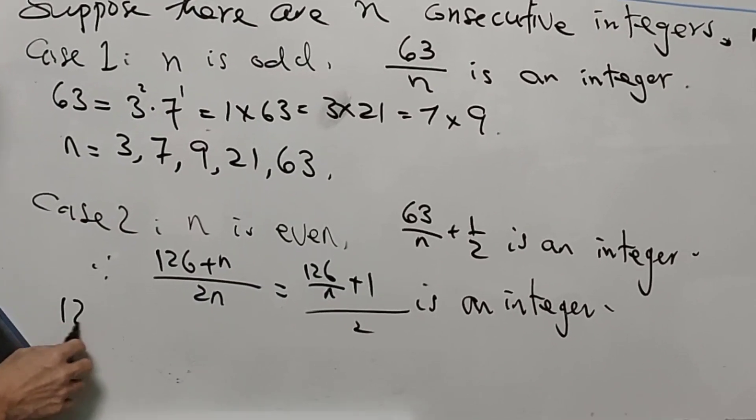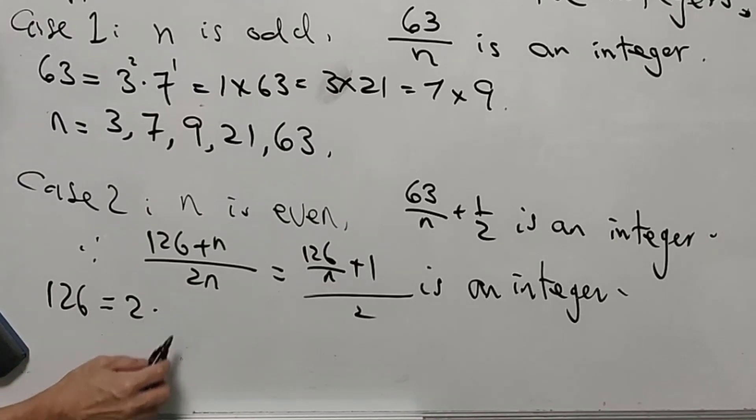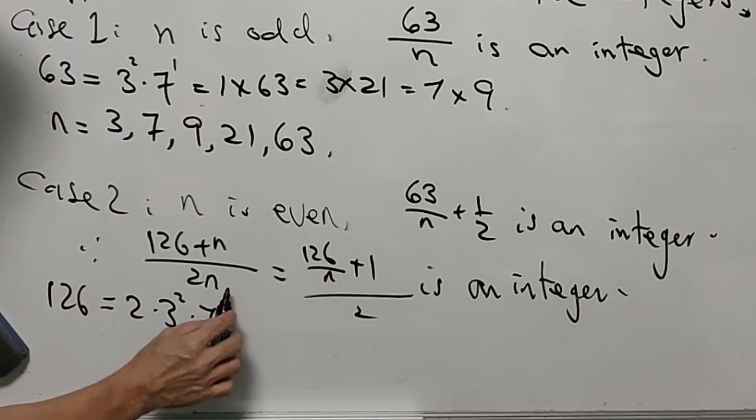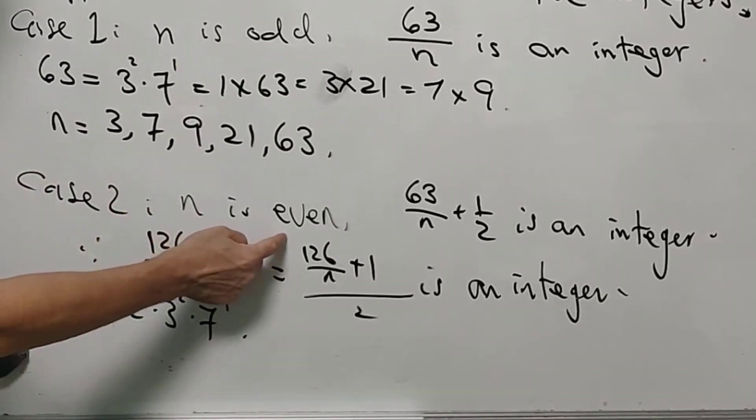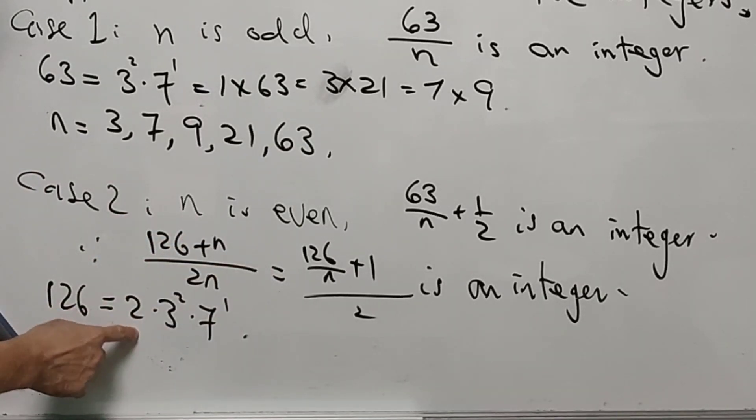And 126 is equal to 2 times 63, that is 3 squared times 7. Since n is an even number, it must have 2 as a factor.